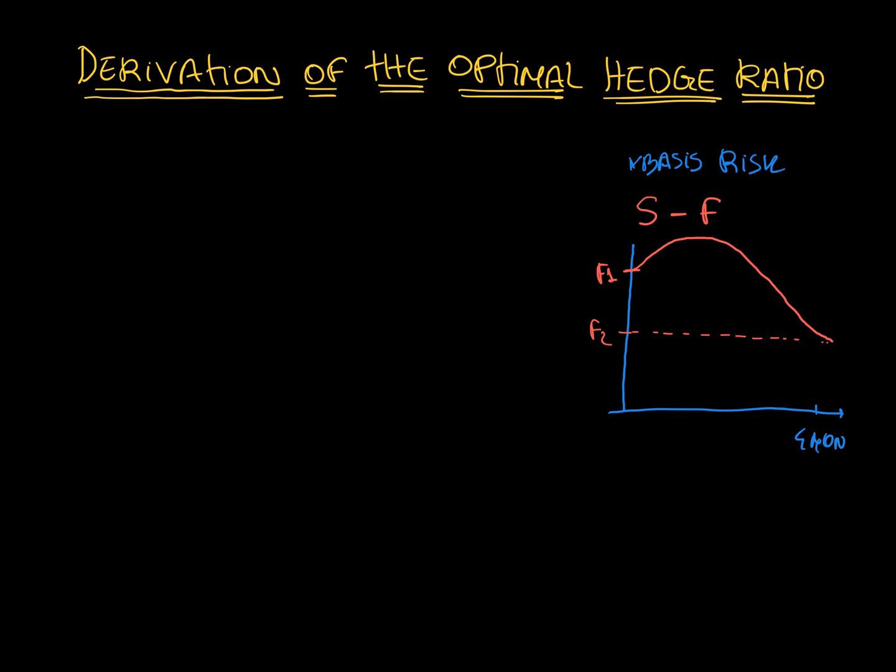In the same way, I will have the spot price, which will start more or less near the futures price f1. Let's call this one s1. Remember that the spot price is the market price, so s1 represents the current market price at the moment.